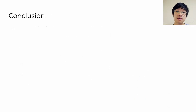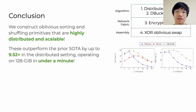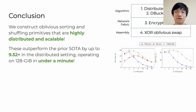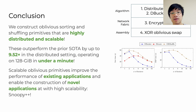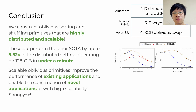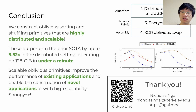In conclusion, we construct oblivious sorting and shuffling primitives that are highly distributed and highly scalable. They outperform prior works by up to almost 10x in the distributed setting and scale very efficiently as you add more hardware. They both improve the performance of existing applications and enable the construction of novel applications due to their inherent scalability, which we demonstrated in the form of Snoopy++. The code is available at the QR code shown if you'd like to take a look at the implementation. Thank you very much for your time.